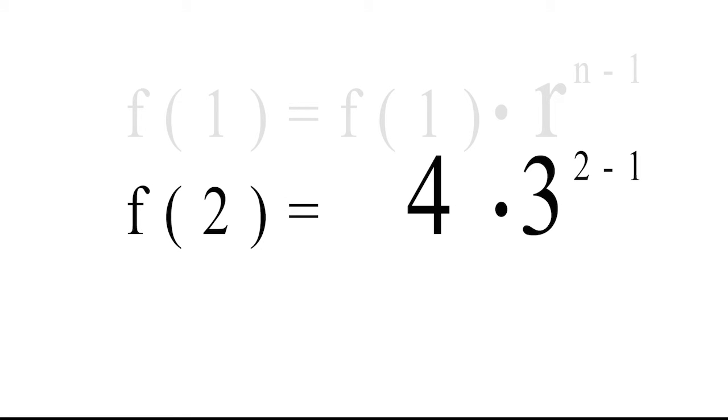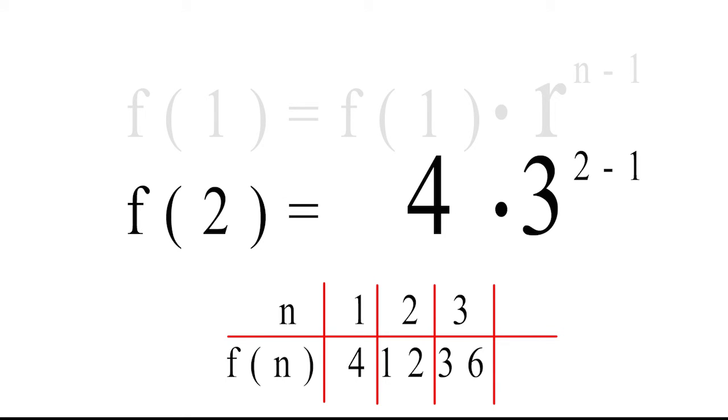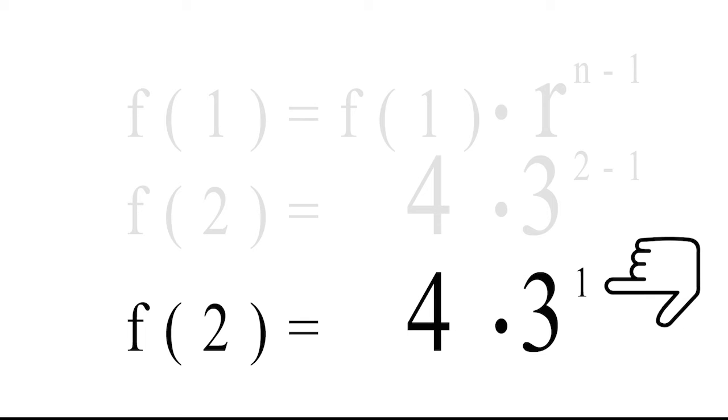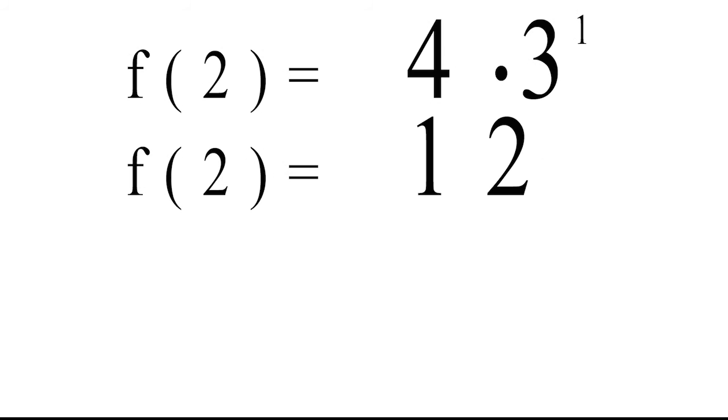Now, take any number in the sequence. f(2) equals 4 times r to the power of n minus 1. Subtract the exponents. 2 minus 1 is 1. f(2) equals 4 times 3 to the power of 1. f(2) equals 12.